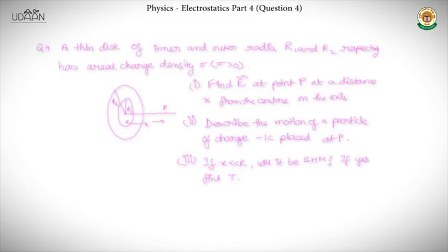Let's move on to the next question. In this question we also have to use integration and for different elements we have to find the electric field and add them up. A disk is given — a thin disk of inner and outer radius r1 and r2 respectively has area charge density sigma. Find E at distance x from the center on the axis, describe the motion of a charge of minus one coulomb placed at point P, and if x is much less than r, determine if it will be SHM and find the time period.